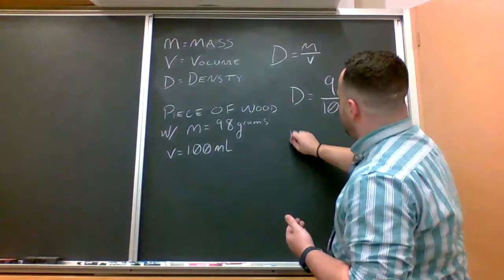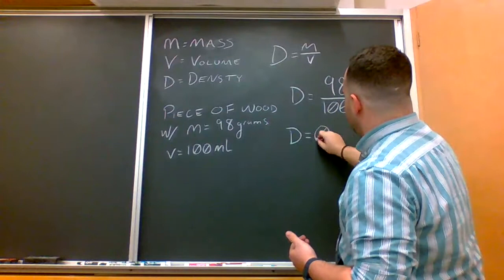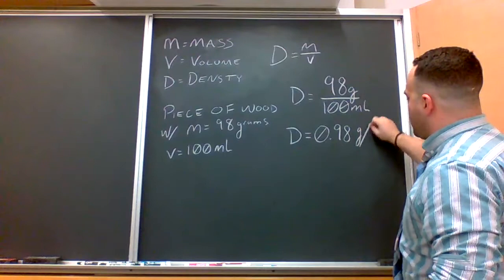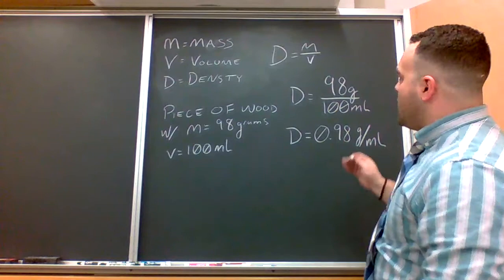And you do some quick mental math, or you use a calculator, and you discover that the density of the piece of wood is 0.98 grams per milliliter.